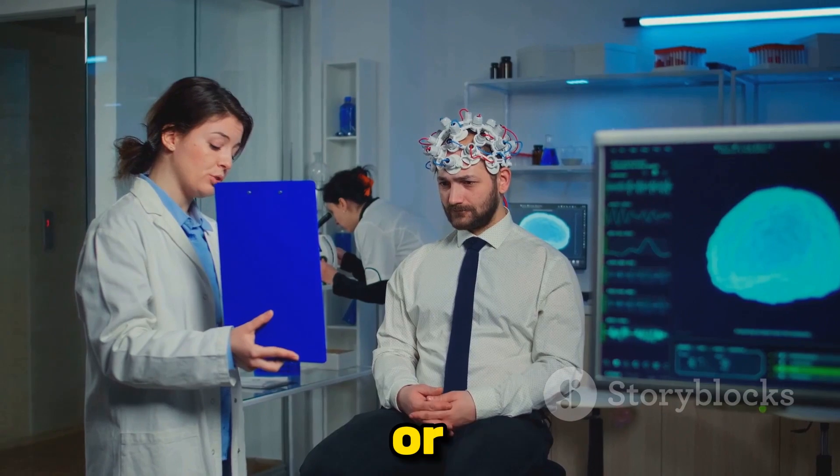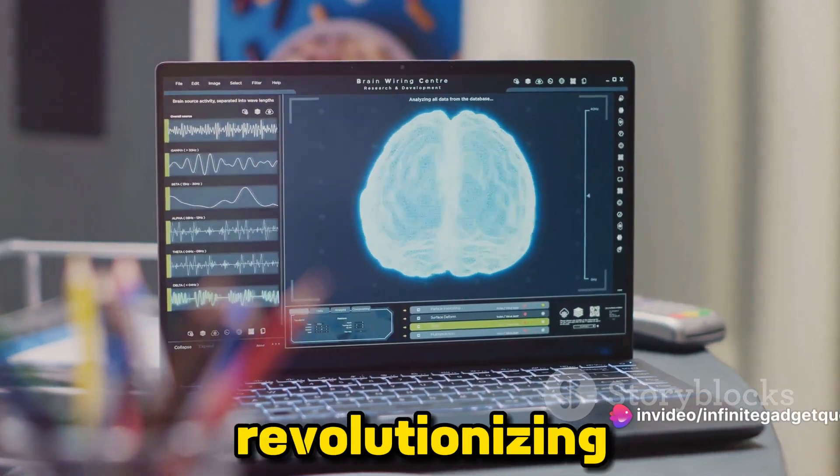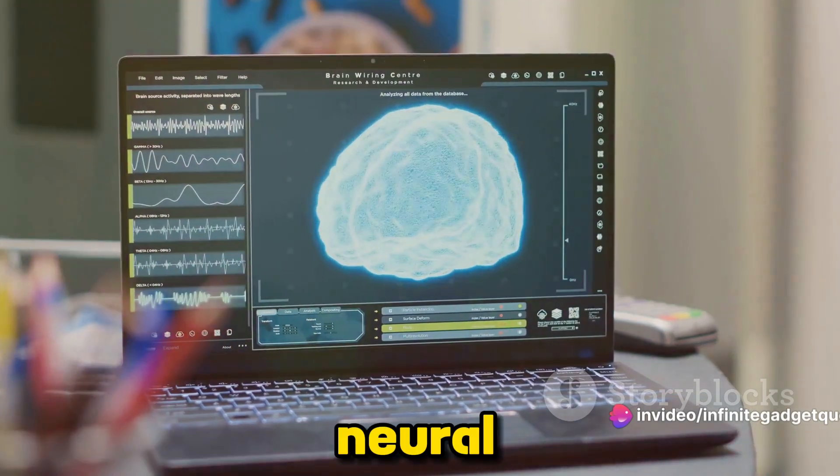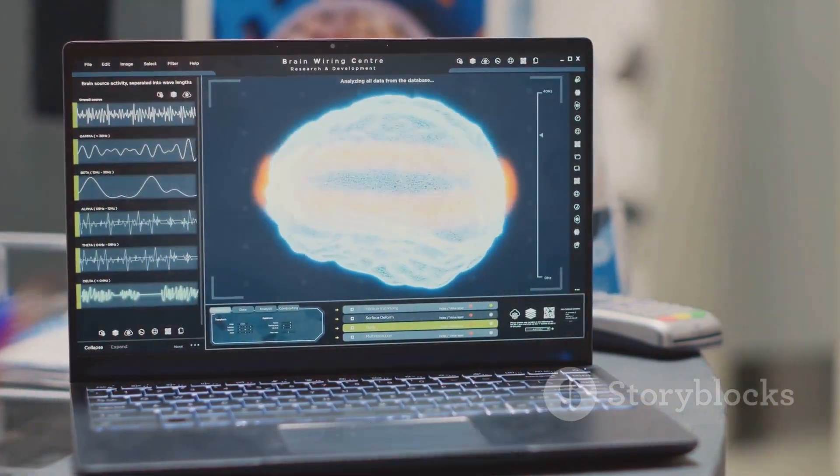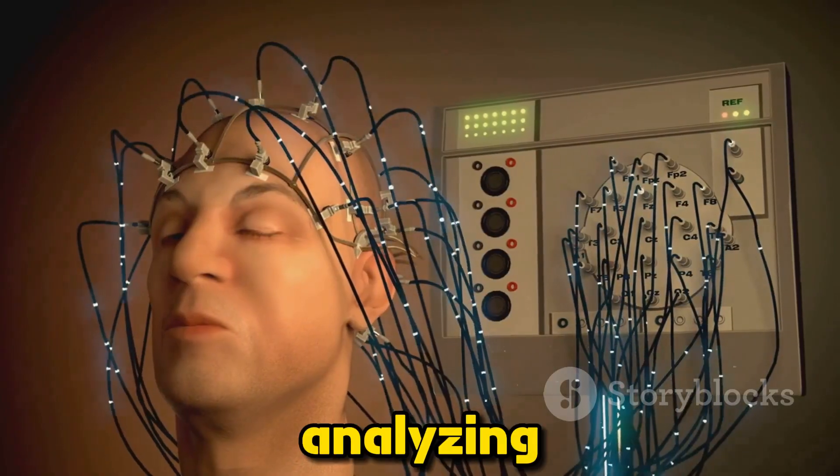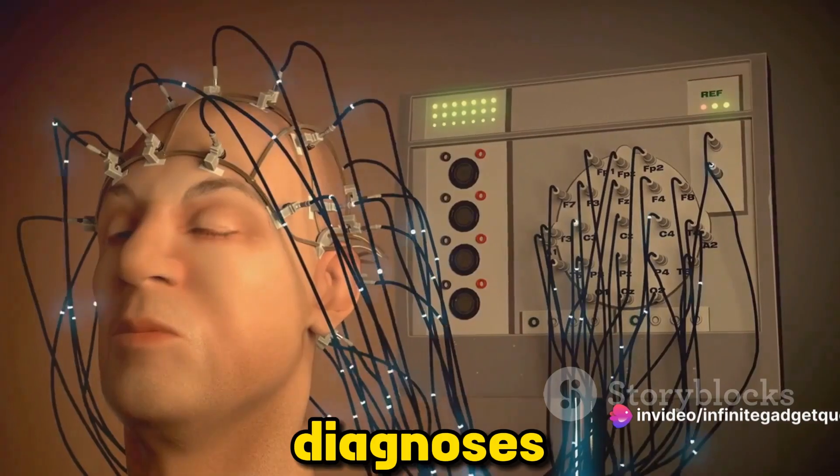But it's not just in our pockets or homes where neural networks make a difference. They're also revolutionizing the field of medicine. Neural networks assist in the detection of diseases, such as cancer, from medical images. By analyzing patterns that might be invisible to the human eye, they help doctors make accurate diagnoses.